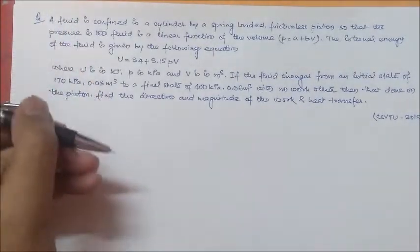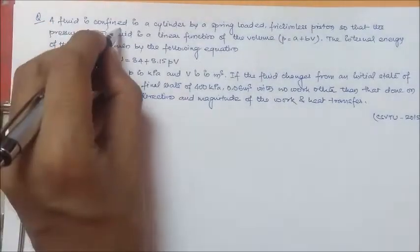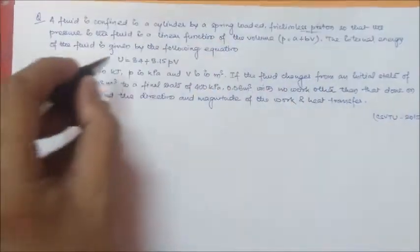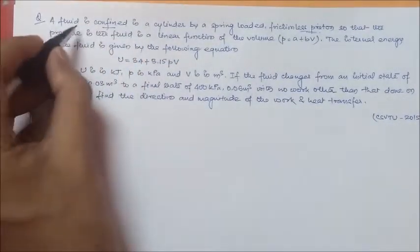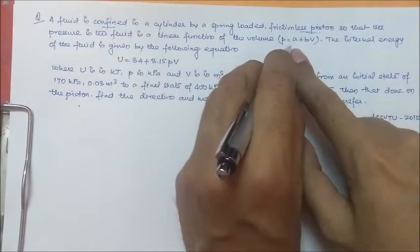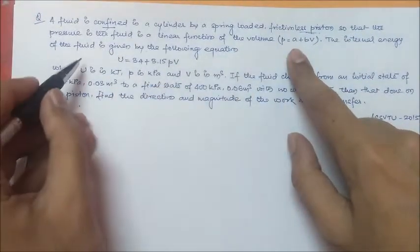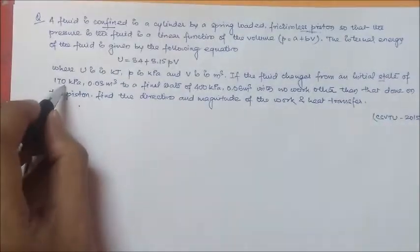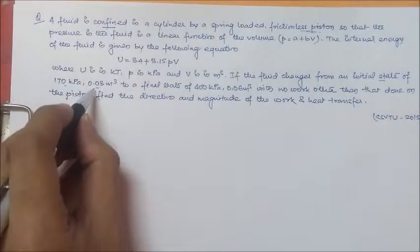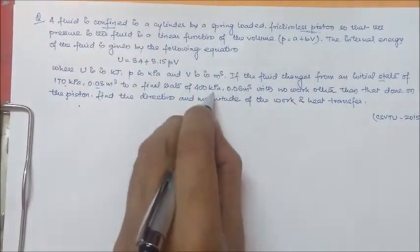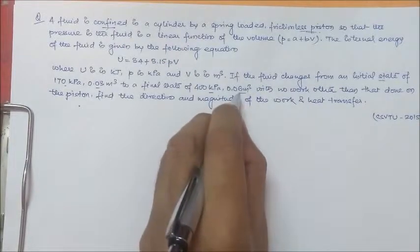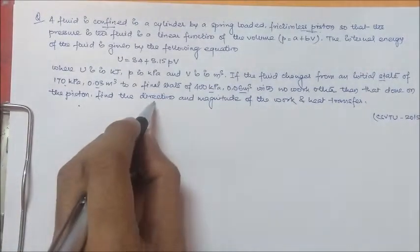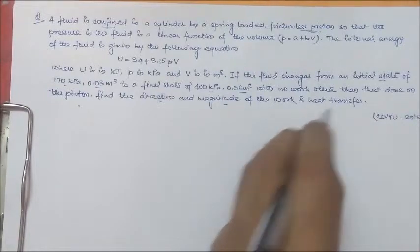See, this question says that the fluid is confined in a cylinder, means it is a closed system. And it is frictionless piston. This means it is a reversible process. Reversible process and we have pressure in terms of volume and the internal energy is given in this way. These things are given and we have to find out the direction and magnitude of the heat and work transfer. So, let's start.